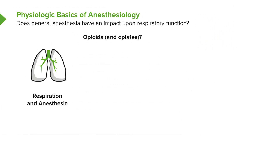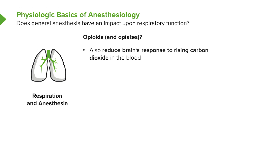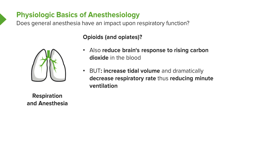Opiates and opioids also have a major effect upon the respiratory system. They also reduce the brain's response to rising carbon dioxide in the blood, but they increase tidal volume dramatically and decrease respiratory rate, thus reducing minute ventilation. So they work exactly the opposite of how vapors work.